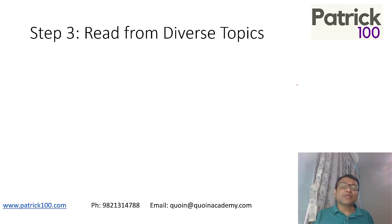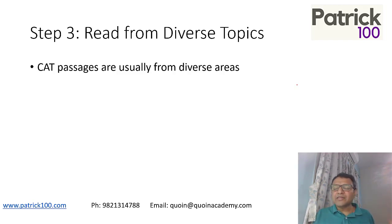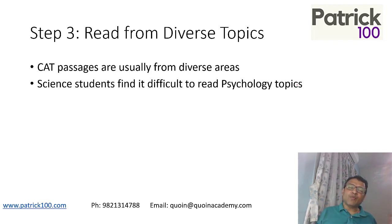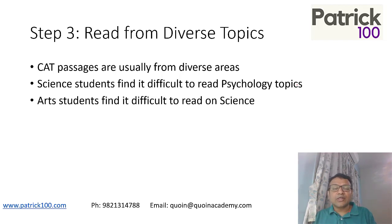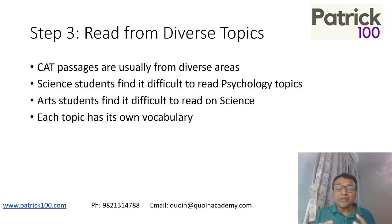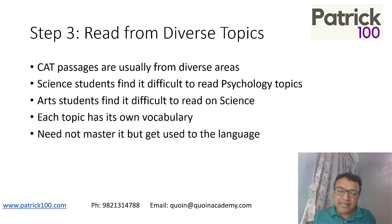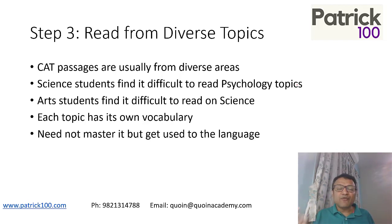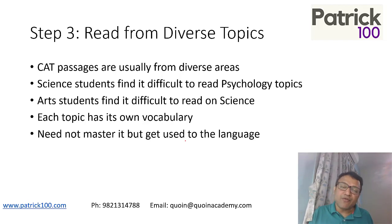The next step is to read from diverse topics. In CAT, passages come from diverse areas, and students from one background find it difficult to read from other areas — science students may find psychology difficult, and arts students may find science difficult. Each topic has its own vocabulary. You don't have to master it, but look at topics that have appeared in previous CAT exams, glance through them, so you become familiar with the language of those topics. That familiarity helps you read faster.